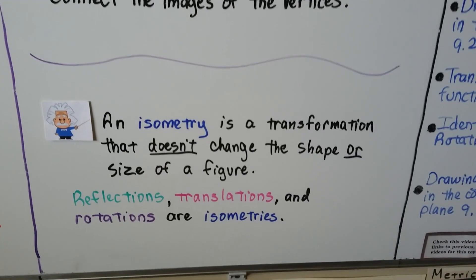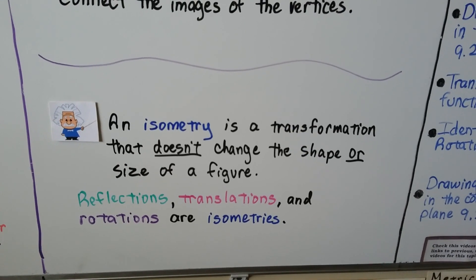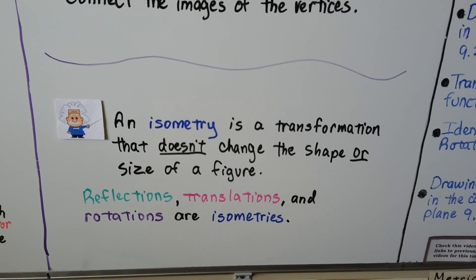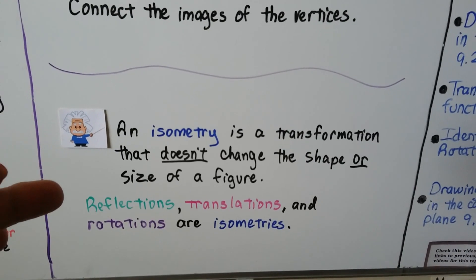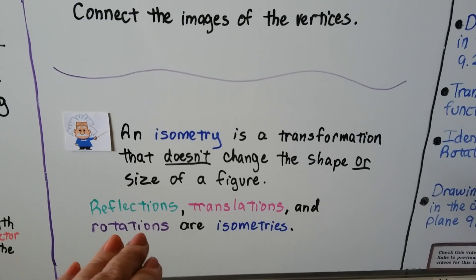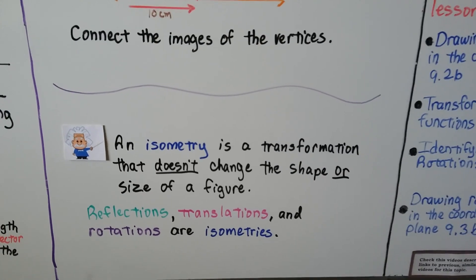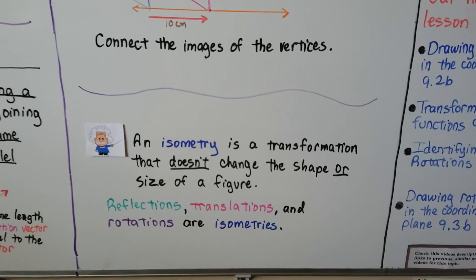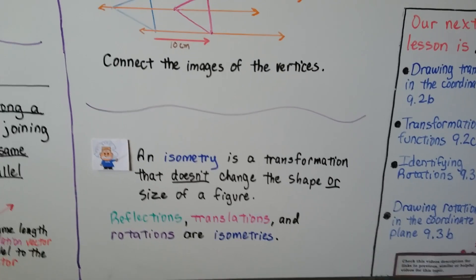Isometry is a transformation that doesn't change the shape or size of a figure. We've spoken about this in every single video for chapter 9 so far. Reflections, which are flips, translations, which are slides, and rotations, which are turns, are all isometries. The size and shape don't change. They don't get larger. They don't enlarge. They don't get smaller. They don't reduce.